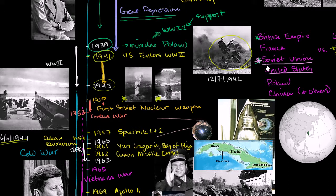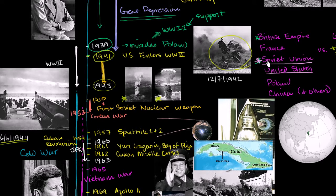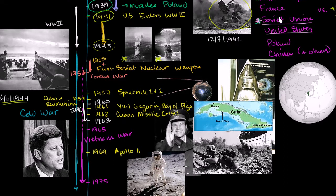Many people in the United States did not want any of this communism coming to them. So you have this major battle that never really erupts into direct conflict between the Soviet Union and the United States — it's always done through proxies. It's called the Cold War because it wasn't a hot war. The US and Soviet Union never really fired bullets at each other; instead they supported other parties who would fire bullets on their behalf.